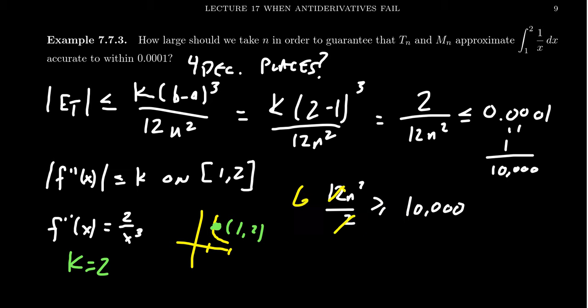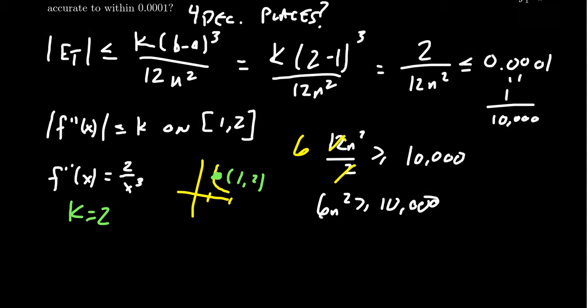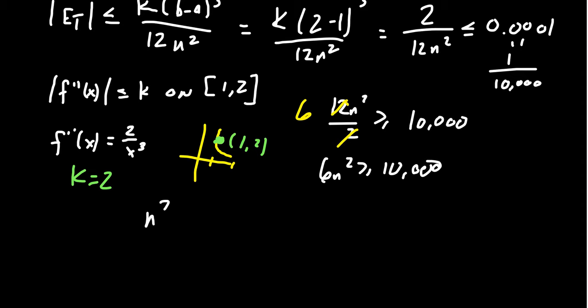2 does go into 12 exactly 6 times. In which case, we get 6n squared is greater than or equal to 10,000. Divide both sides by 6. We get that n squared should be greater than or equal to 10,000 over 6. Because the next step is to take the positive square root. n needs to be greater than or equal to the square root of 10,000 over 6. And so using a calculator to help us out with that, this number is going to be approximately 40.8.